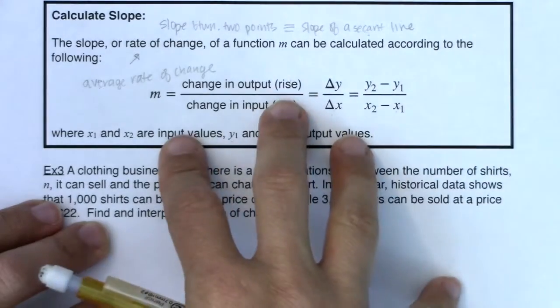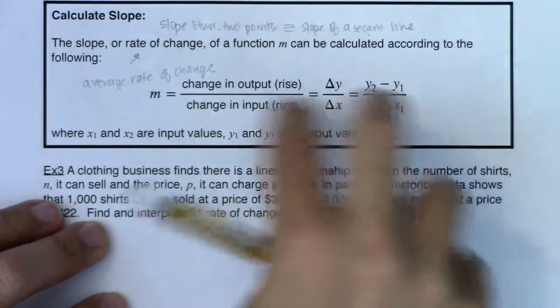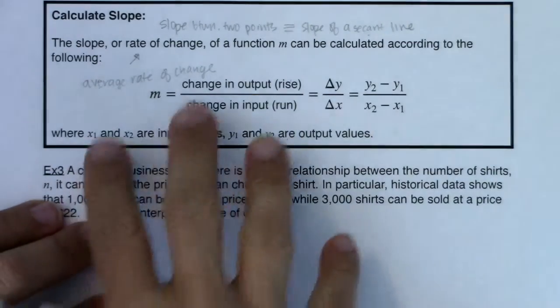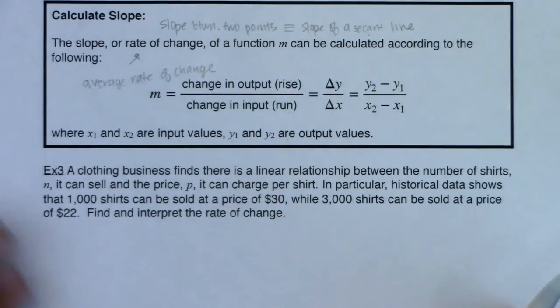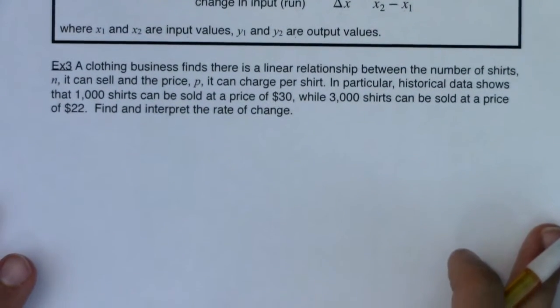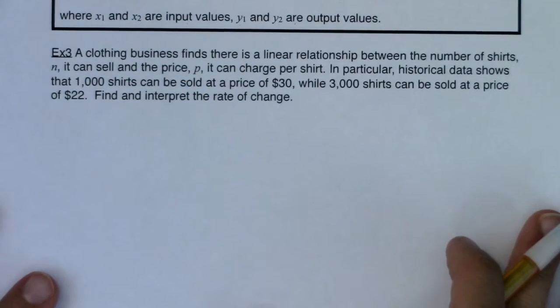So this is old school slope, slope between two points. When you get to calculus, you learn new school slope, which is slope at one point. It's awesome. So with that, let's go ahead. I'm going to scooch the page up and then we're going to go ahead and try and interpret a slope that we're going to find in example three.